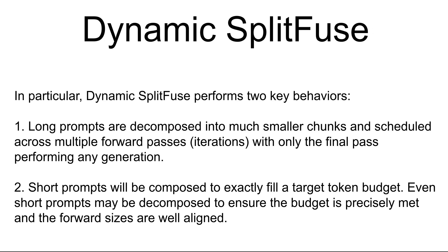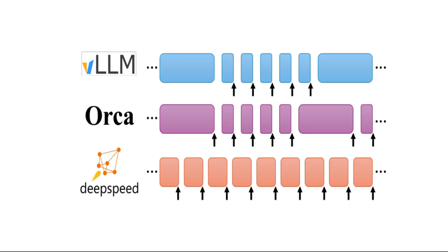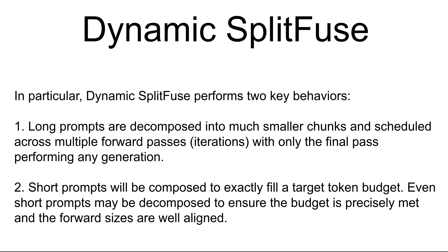This brings us to Dynamic Split Fuse. DeepSpeed FastGen is built to leverage continuous batching and non-contiguous KV caches to enable increased occupancy and high responsiveness for serving large language models in data centers. It introduces Split Fuse, which leverages dynamic prompt and generation decomposition and unification to further improve continuous batching and system throughput. For long prompts, Dynamic Split Fuse breaks the long text into smaller, more manageable pieces processed one at a time, and only the very last piece is used to actually generate the final output.